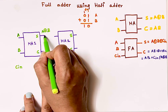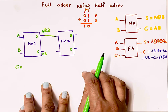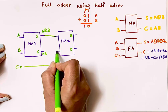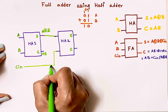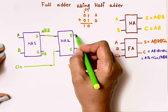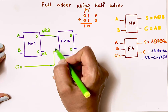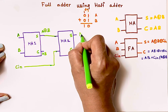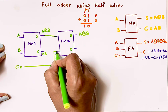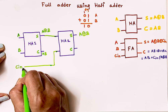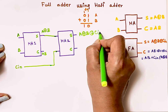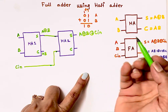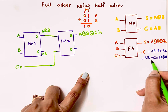For the second half adder, I want the sum to be A XOR B XOR C-in. So I connect the A XOR B output from the first half adder as one input of the second half adder, and take C-in as the second input. The sum output of the second half adder is then (A XOR B) XOR C-in, which gives the correct final sum.